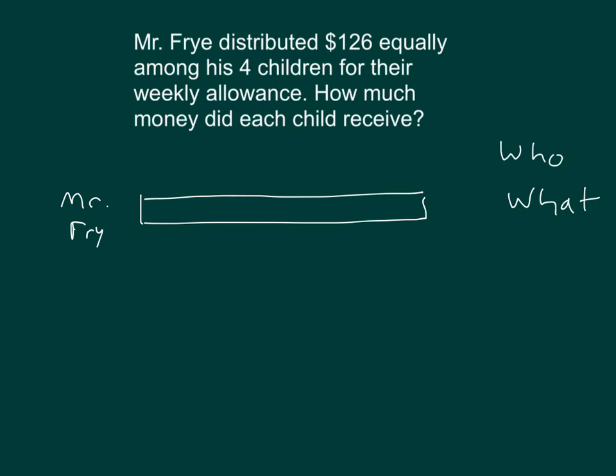How much money did he have? Right, $126. What else do we have to do with this bar to adjust the model? Well, there's four children, and they're each sharing an equal amount. Let's divide the bar into four equal parts. What's the question again? Right, how much money did each child receive? That's the unknown. We should put a question mark inside one of these parts.